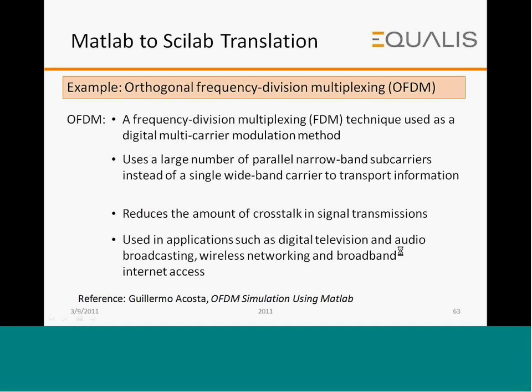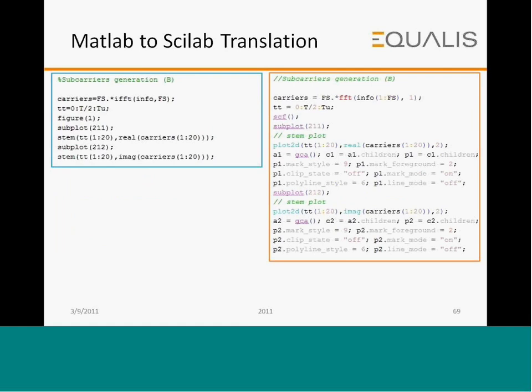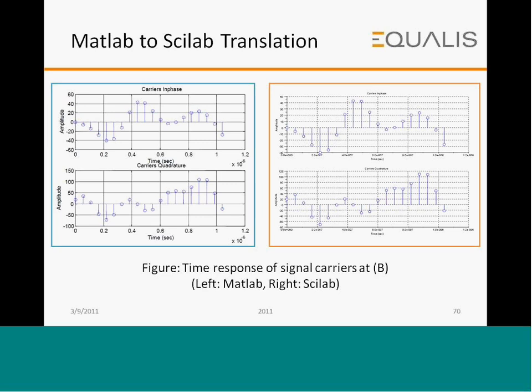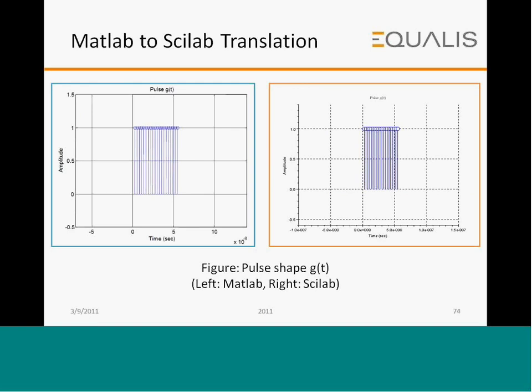MATLAB to Scilab translation — Scilab has a built-in translator. If you already have a MATLAB program, you can use the MATLAB to Scilab translator to convert it into a Scilab program. An example from the communications area shows the MATLAB program on the left and the translated Scilab program on the right. The output from both MATLAB and Scilab programs are identical; the values are the same, with only scaling differences in the two graphs.